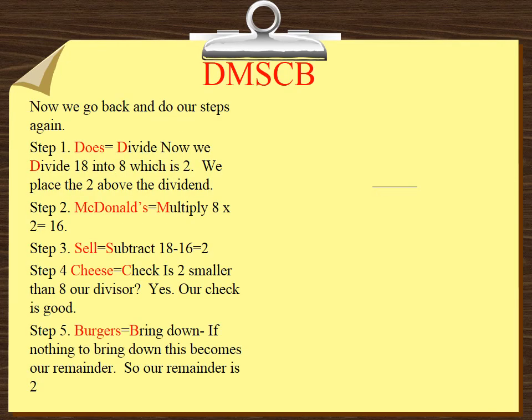Now we go back and do our steps again. Step 1, Does: Now we divide 18 into 8, which is 2. We place the 2 above the dividend. Step 2, McDonald's equals multiply: 8 times 2 equals 16.